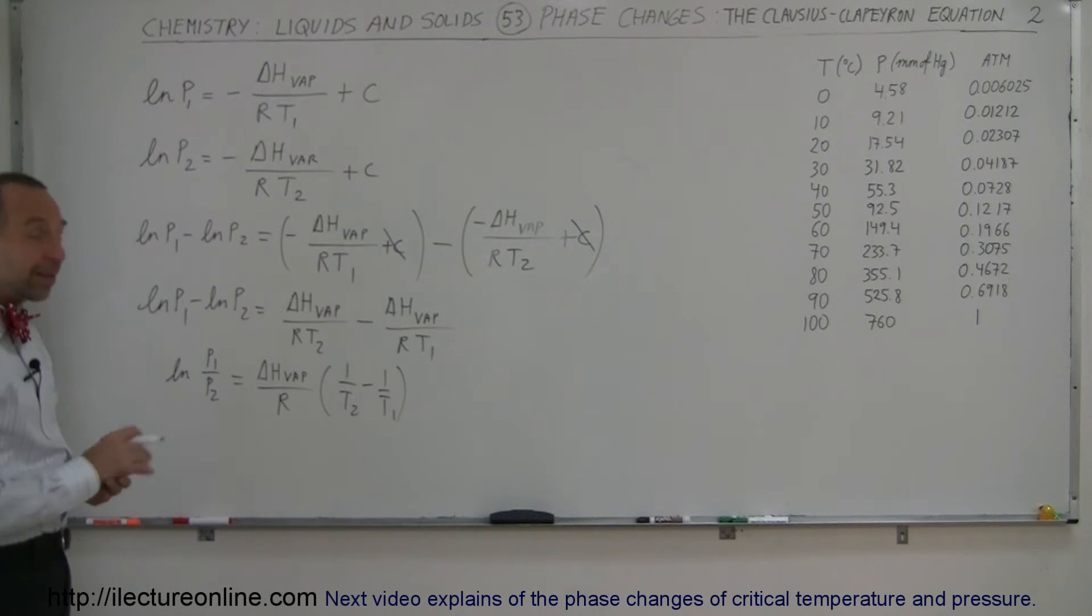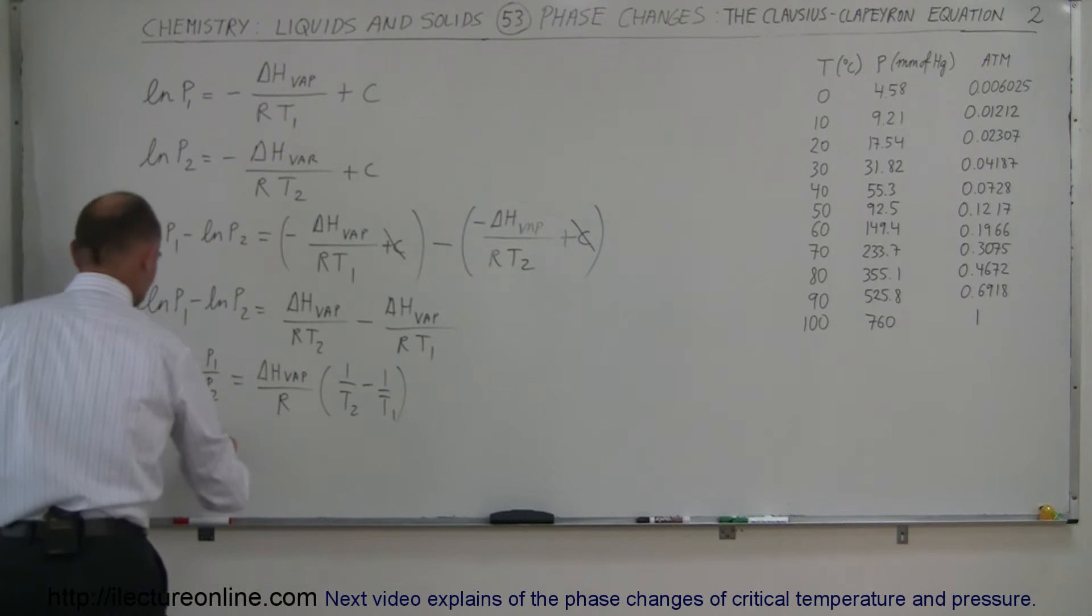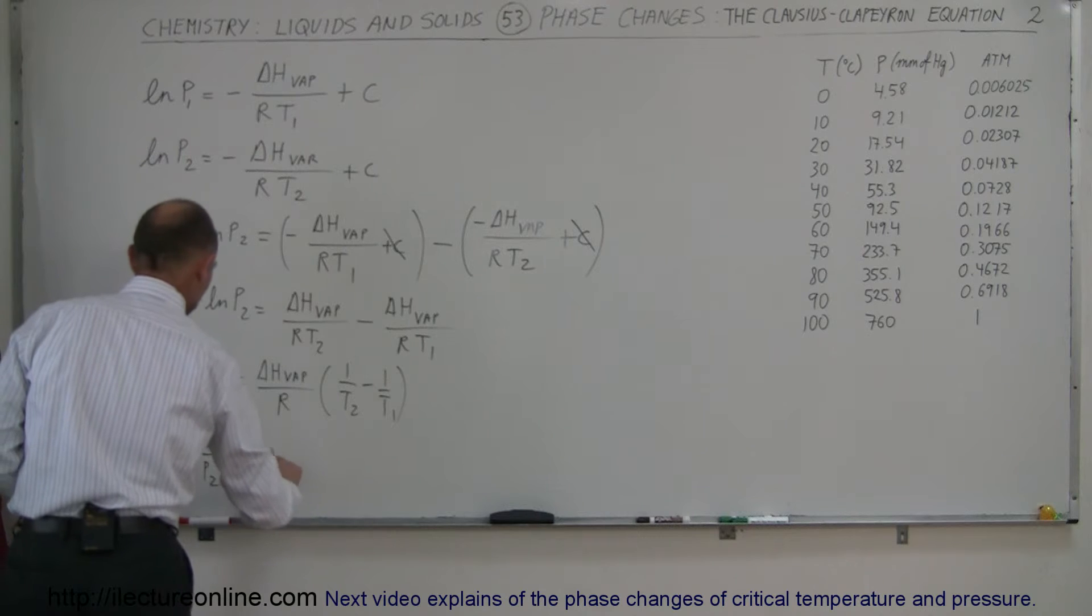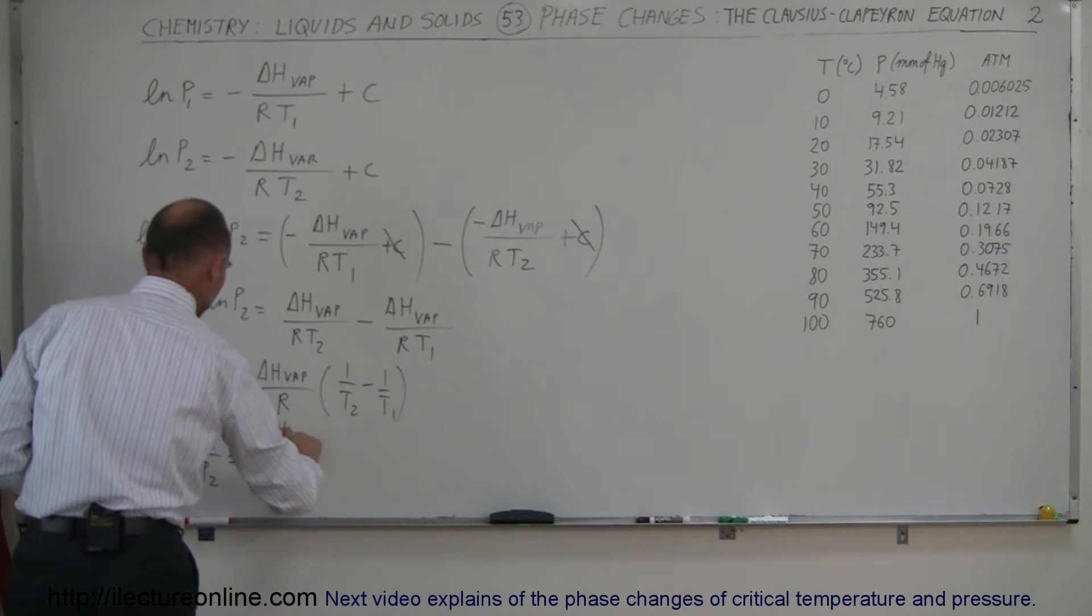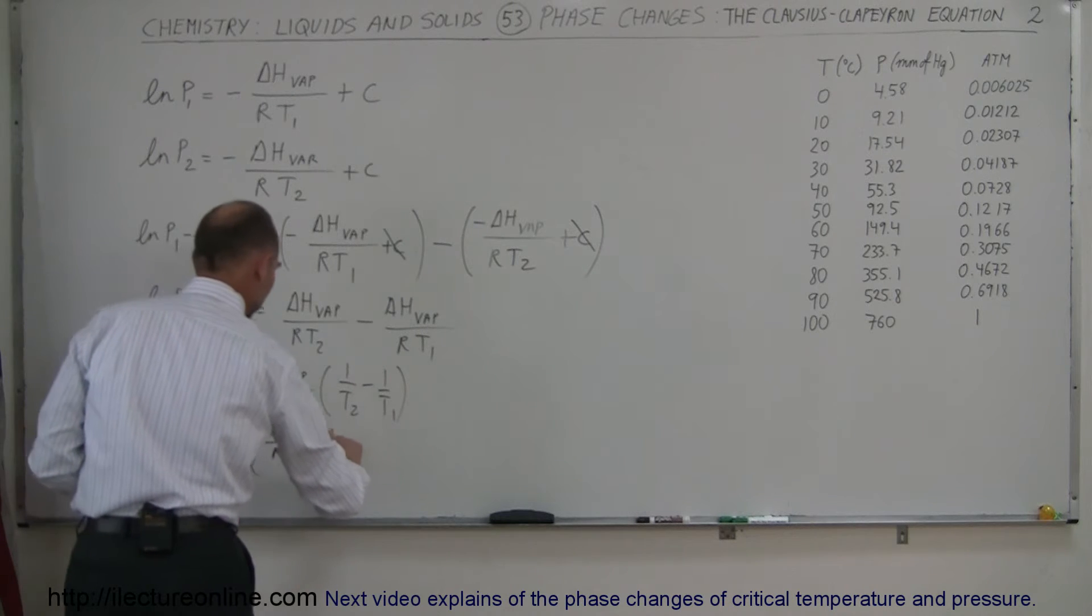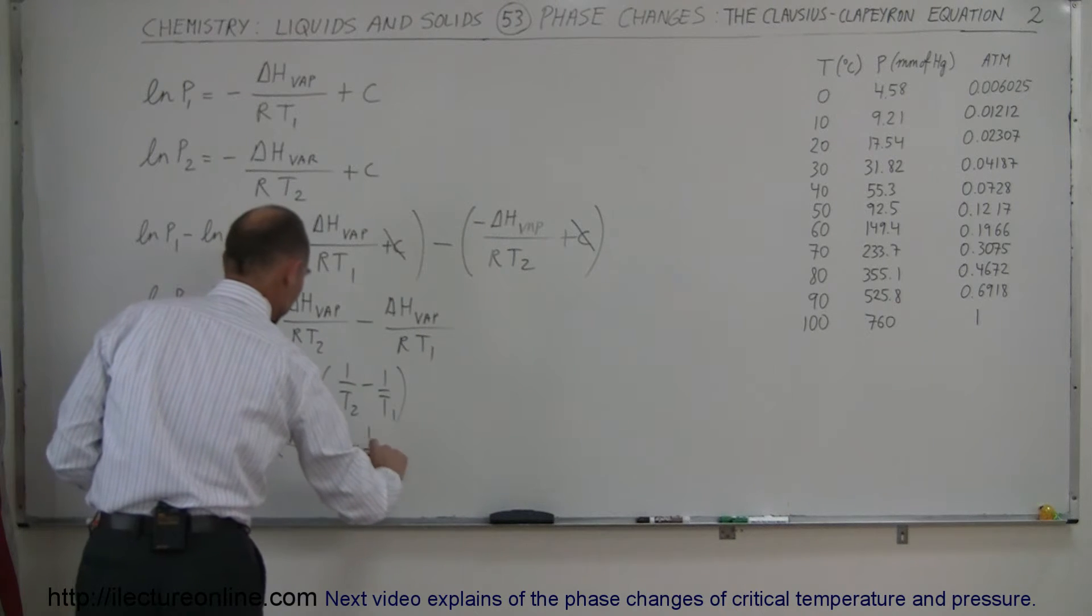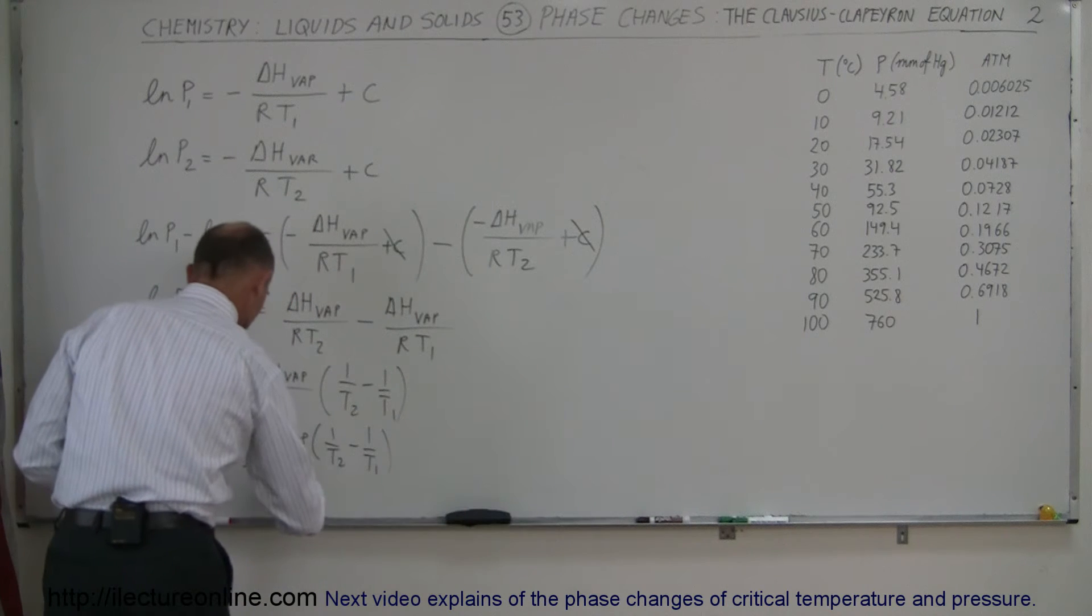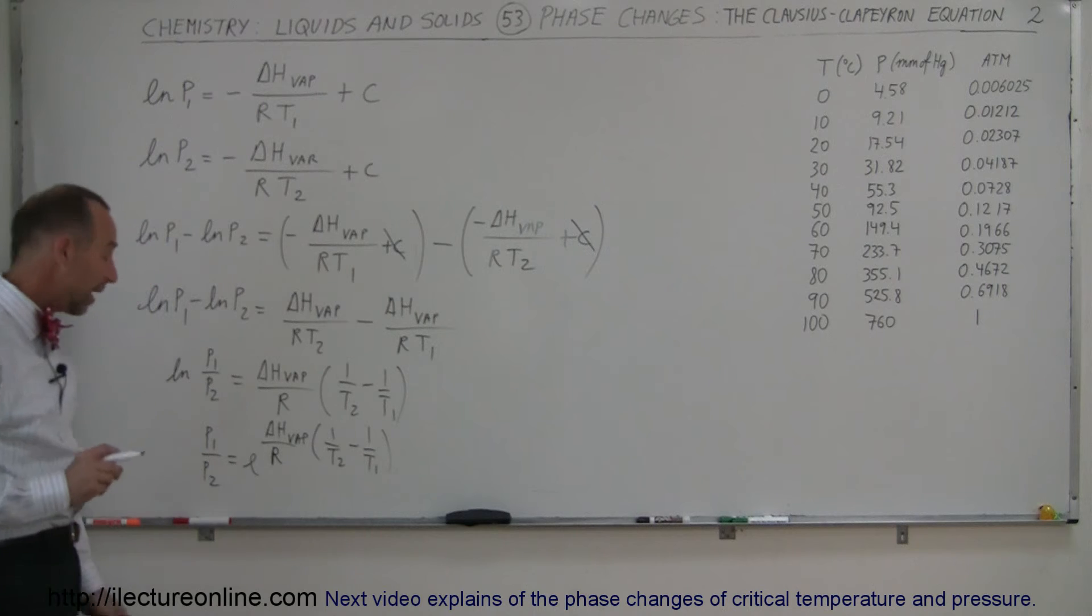If I now take the anti-log of both sides, I can get rid of the natural log. So P1 over P2 equals E to the delta H vaporization over R times 1 over T2 minus 1 over T1.